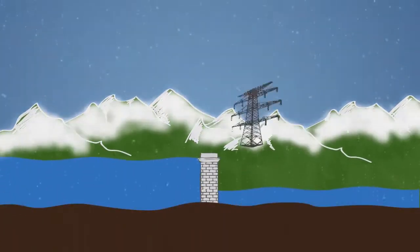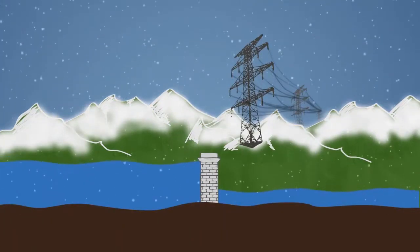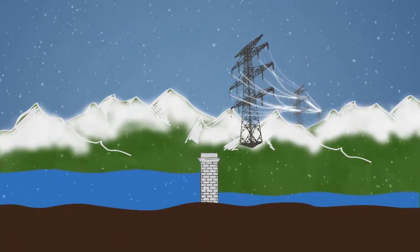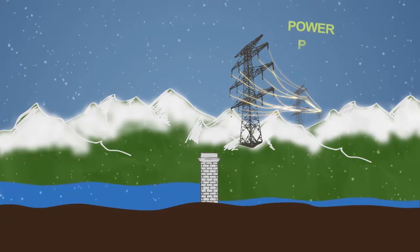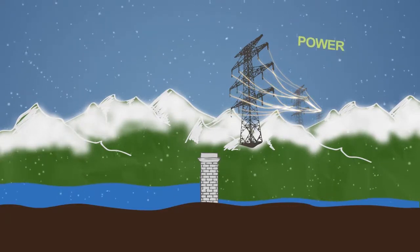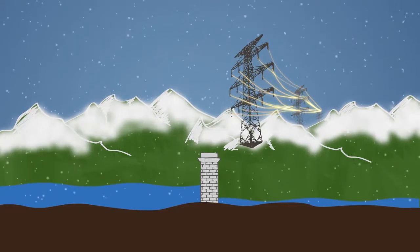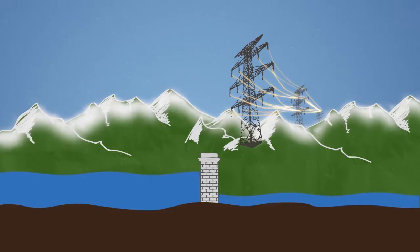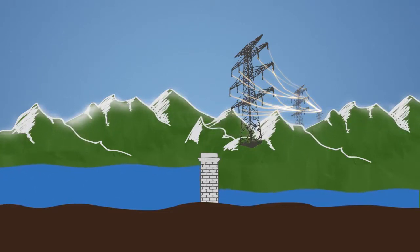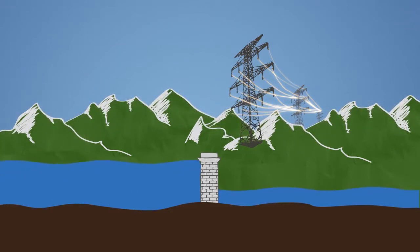In winter, reservoirs are drawn down and water is released, primarily to meet the need for hydroelectricity. By spring, reservoir levels are much lower and the cycle begins again as melting snowpack refills the reservoirs.